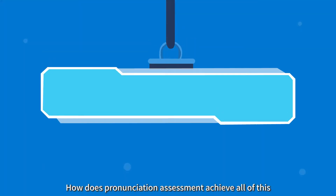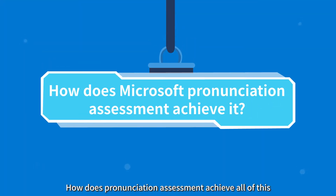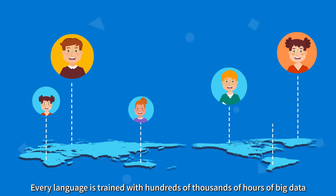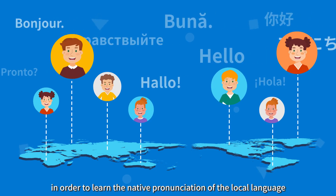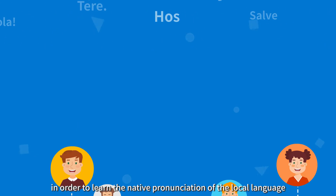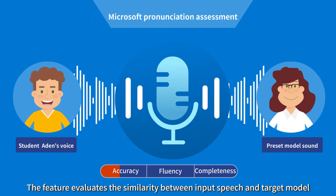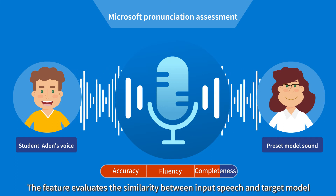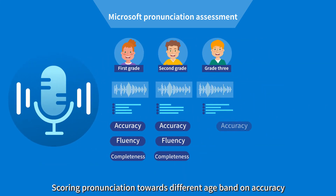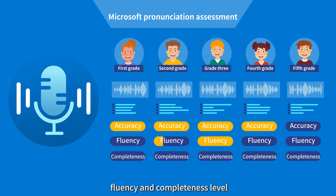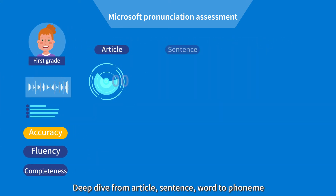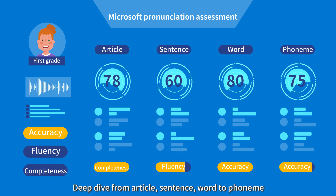How does pronunciation assessment achieve all of this? Every language is trained with hundreds of thousands of hours of big data, in order to learn the native pronunciation of the local language. The feature evaluates the similarity between input speech and the target model, scoring pronunciation across different age spans on accuracy, fluency, and completeness level — with a deep dive from article, sentence, and word to phoneme.